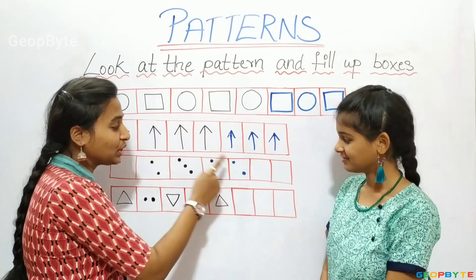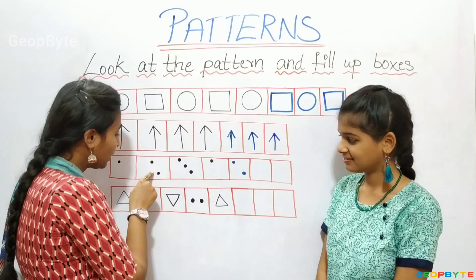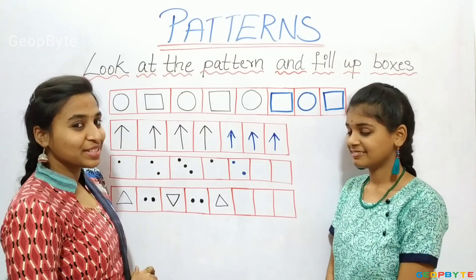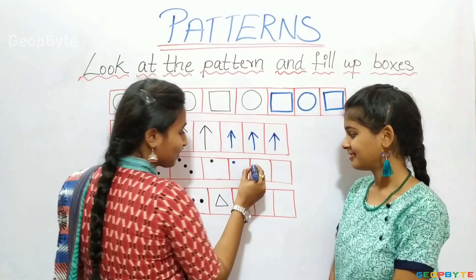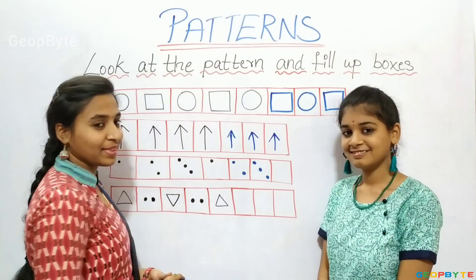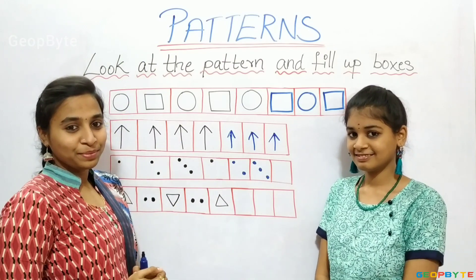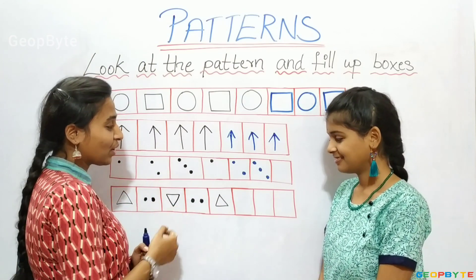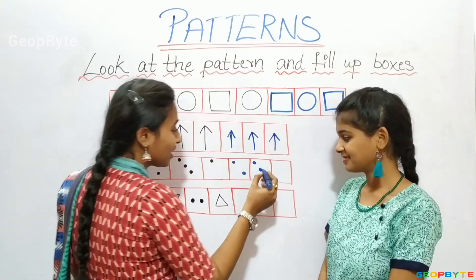Now, after two dots, what will we get? Let us see. After two dots, we have three dots. So after two dots, we will get three dots. Kids, after three dots, what will come? Let us see. After three dots, we have a dot. So let us draw a dot.